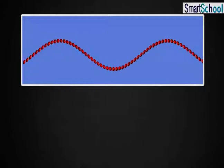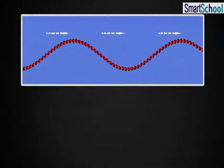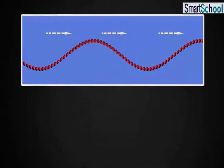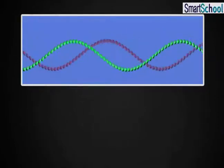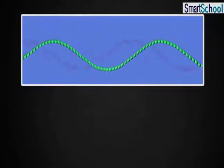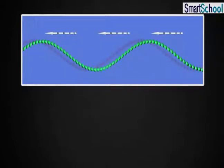Consider a wave travelling along the positive direction of x-axis and a reflected wave of the same amplitude and wavelength in the negative direction of x-axis.